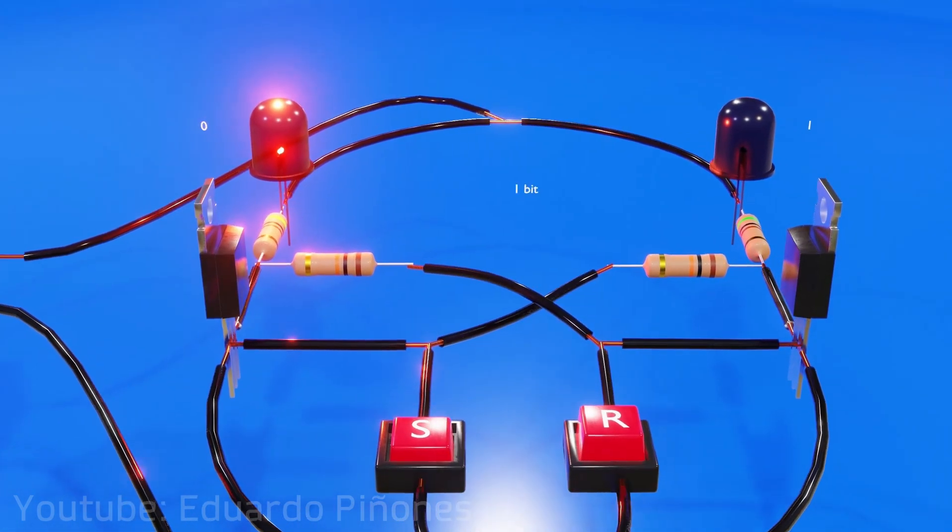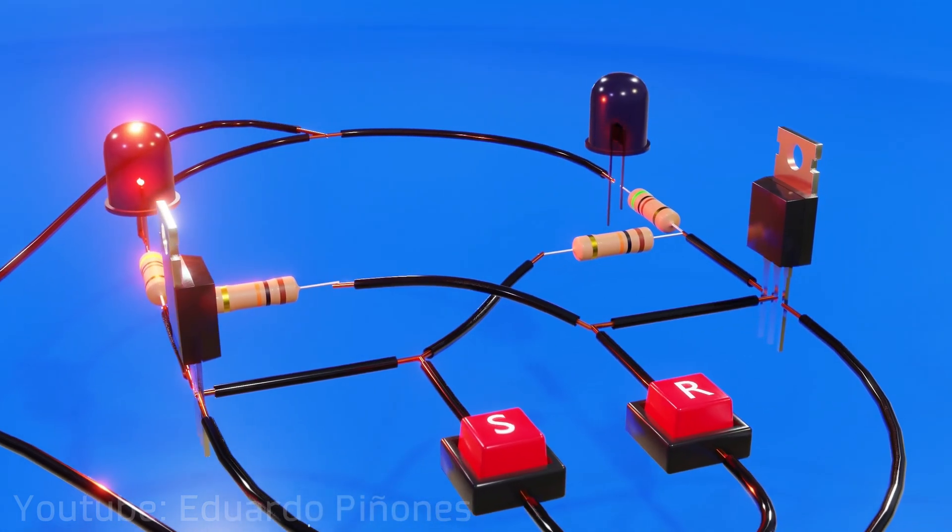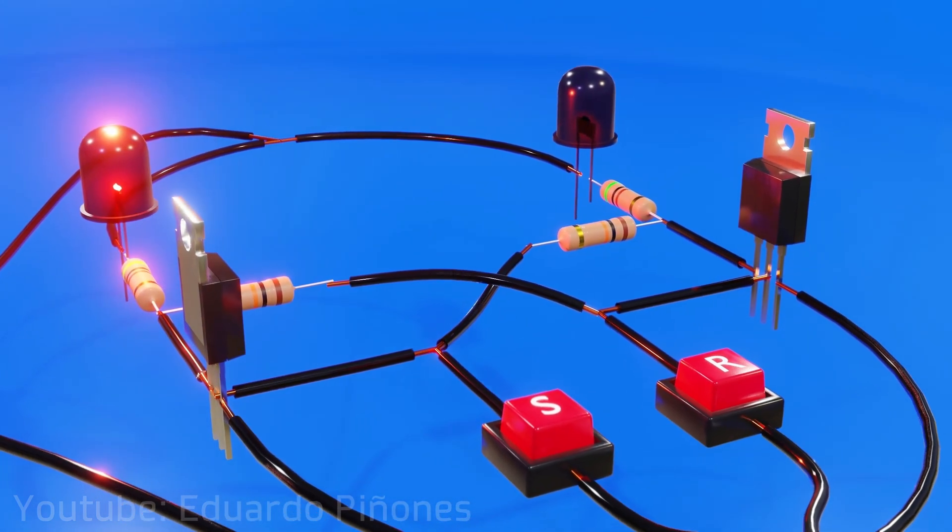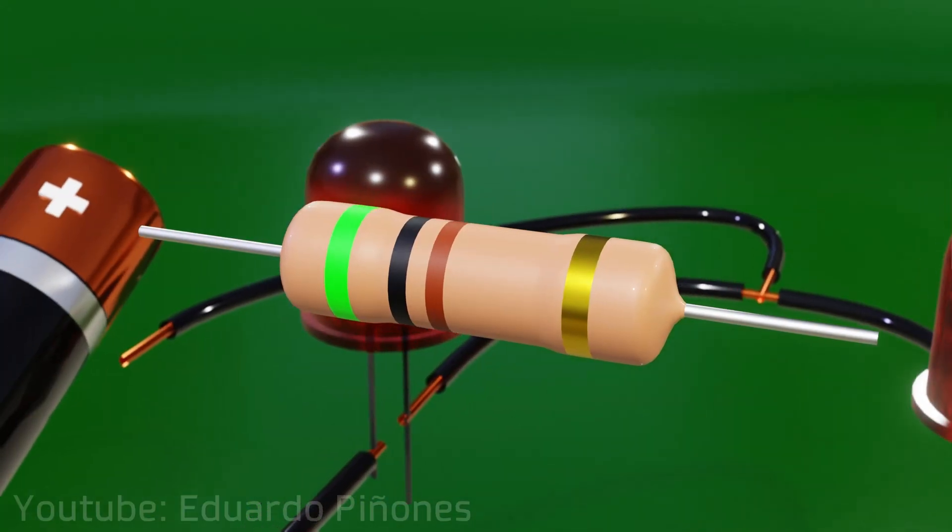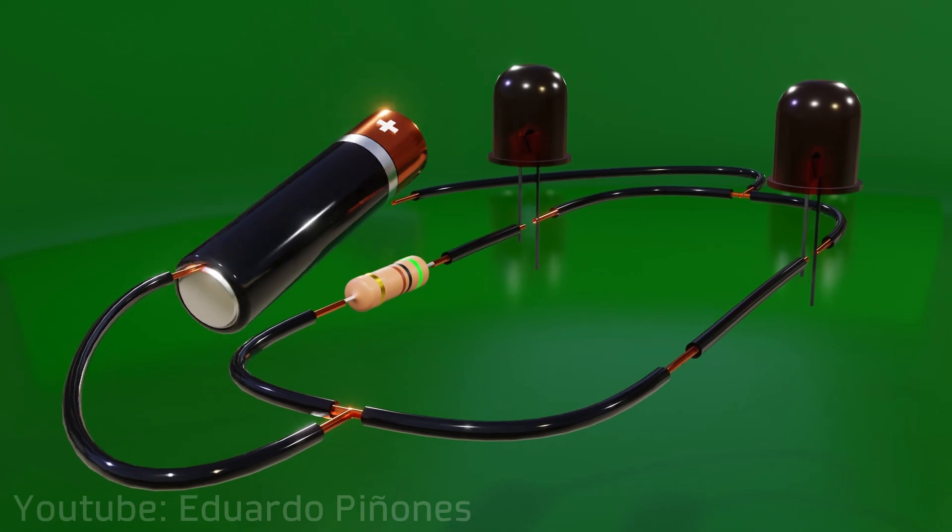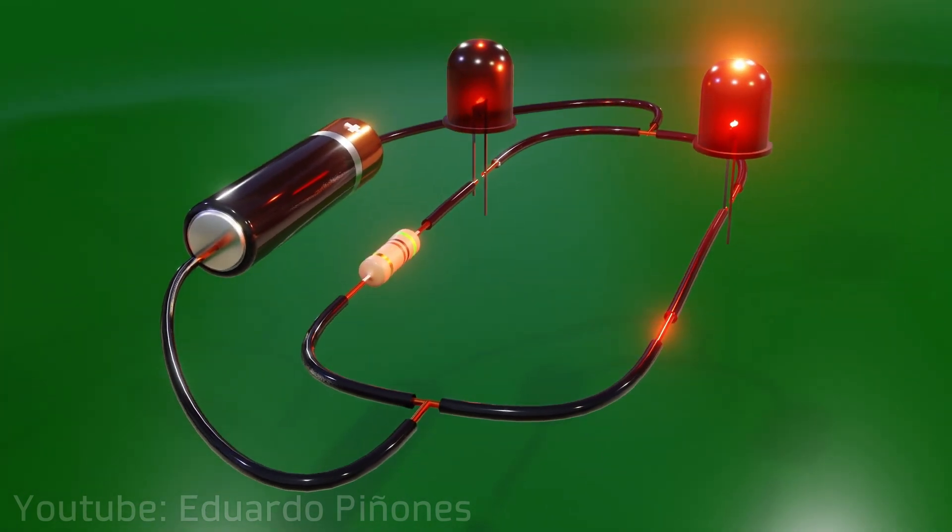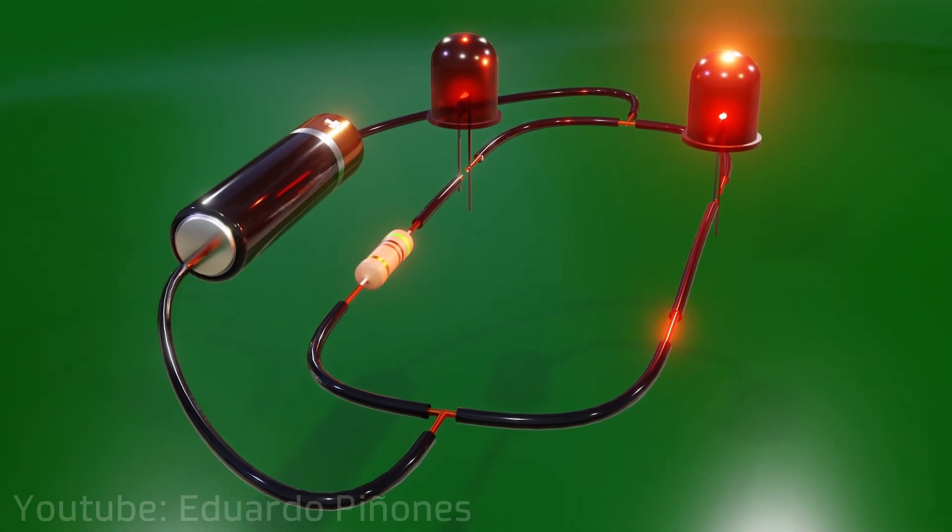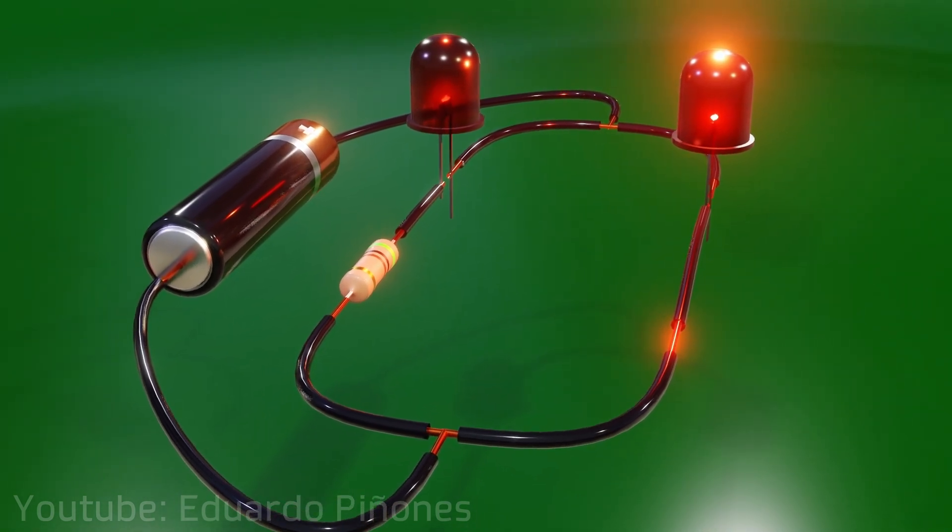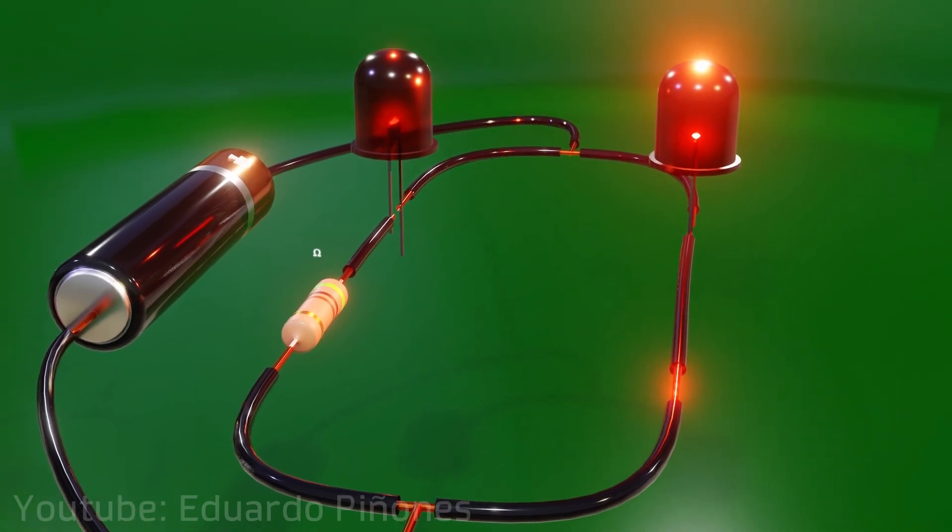To understand how this behavior is achieved, we must first remember how the elements that compose it work, at least at a general level. On the one hand, a resistor is able to restrict the passage of electricity through a wire, affecting the current that passes through the different parts of a circuit, and thanks to this quality can be used to guide where electricity will pass, because simply put, electricity always prefers the path of least electrical resistance.